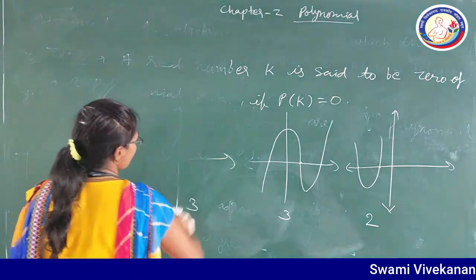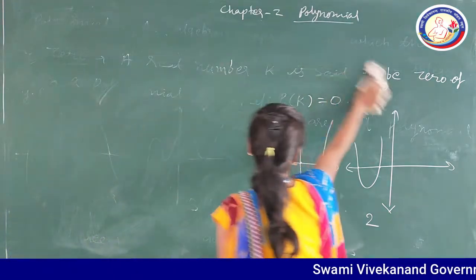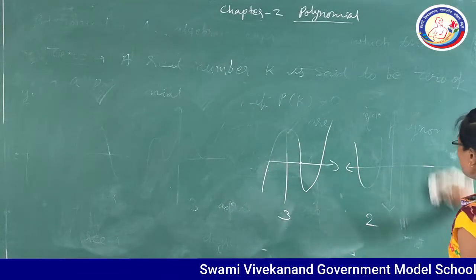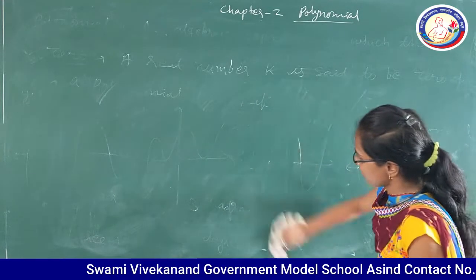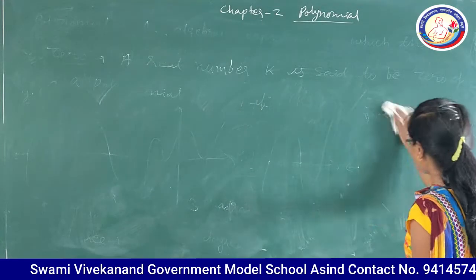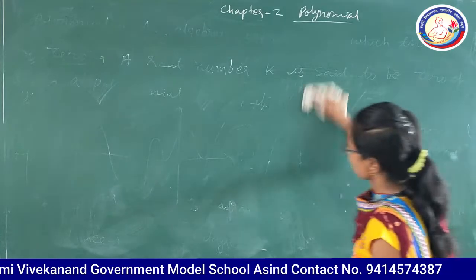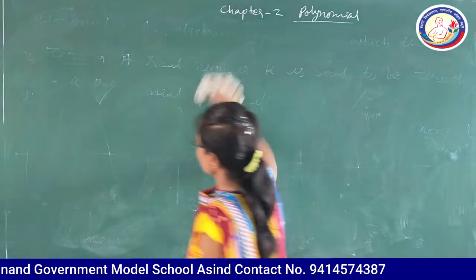Next important topic is the relationship between zeros and coefficients. This is a topic from which 100% one question is asked in the exam.